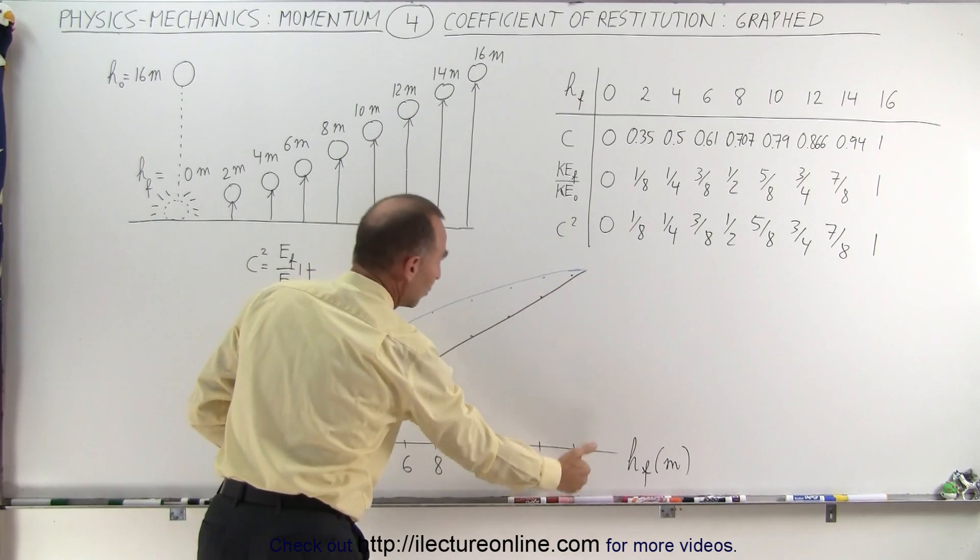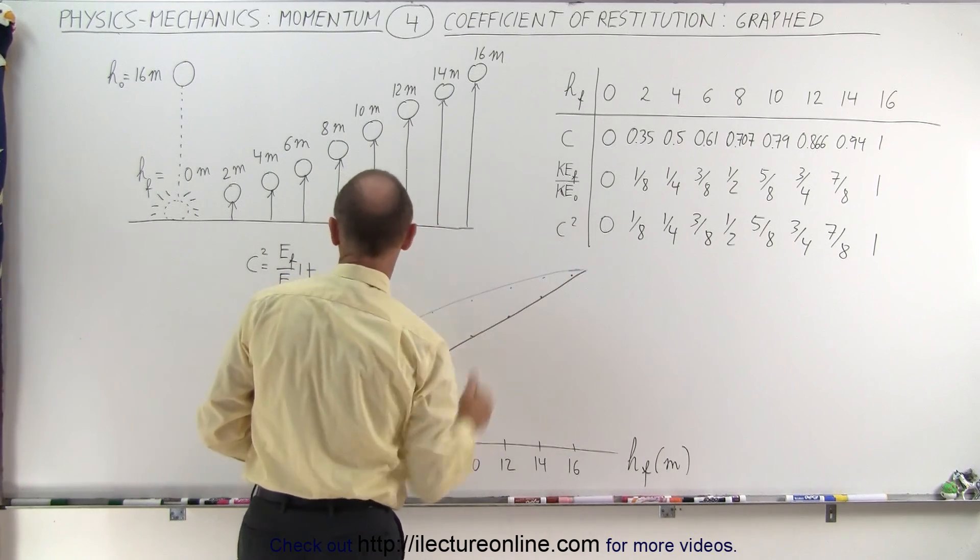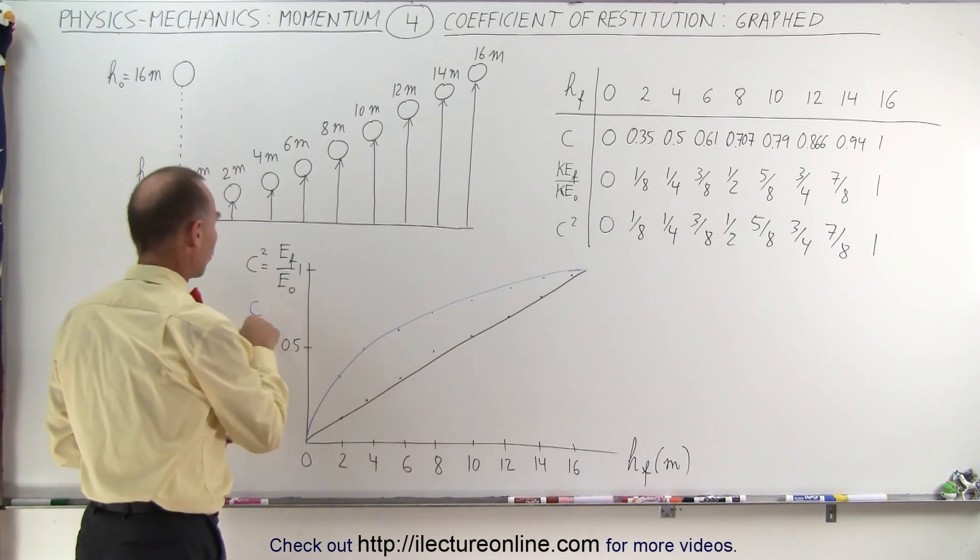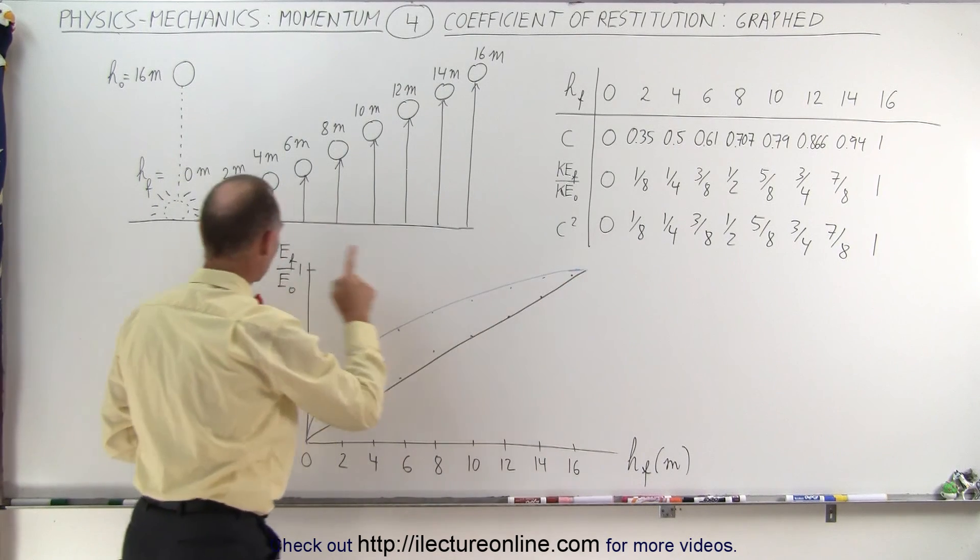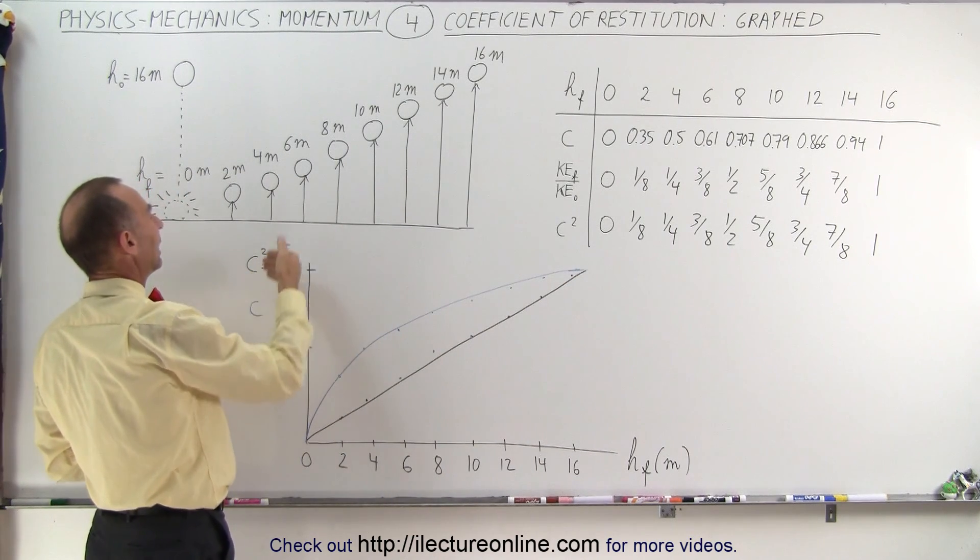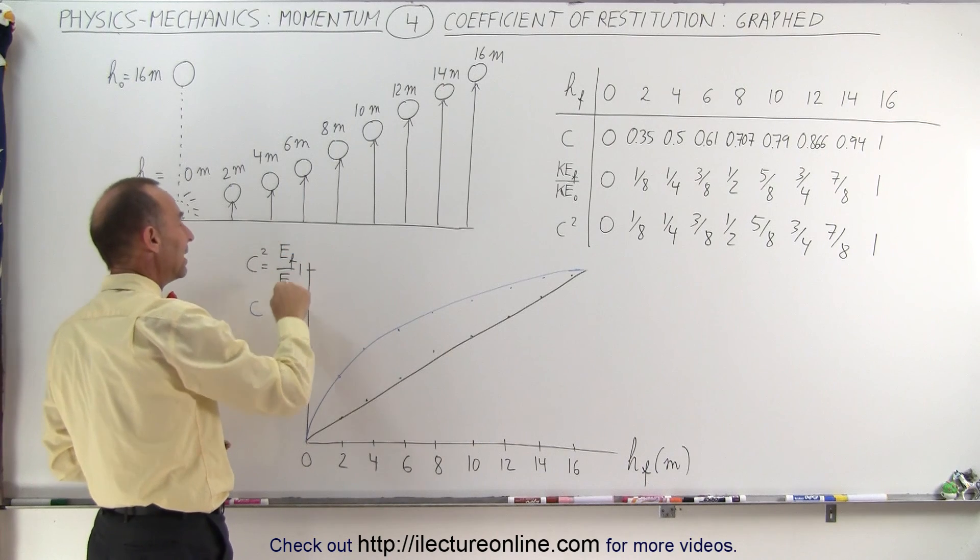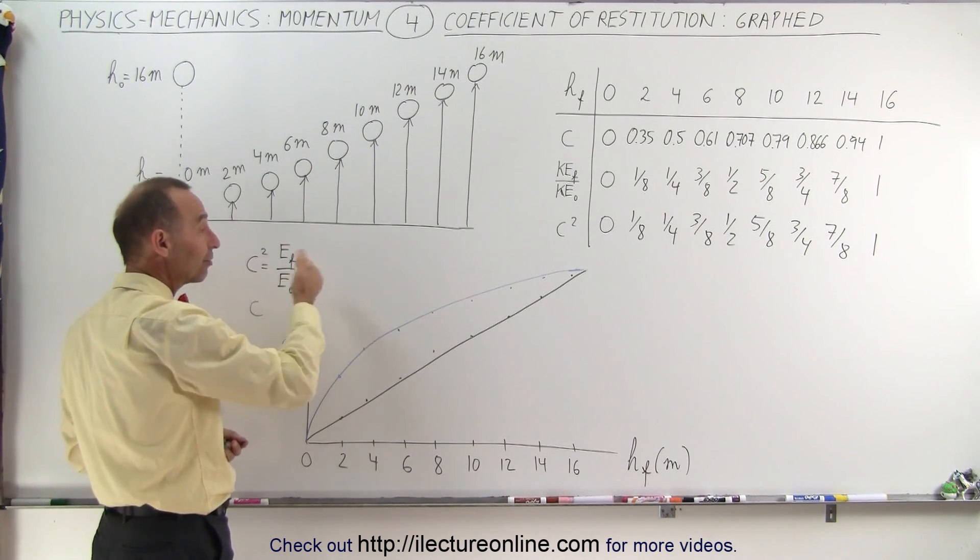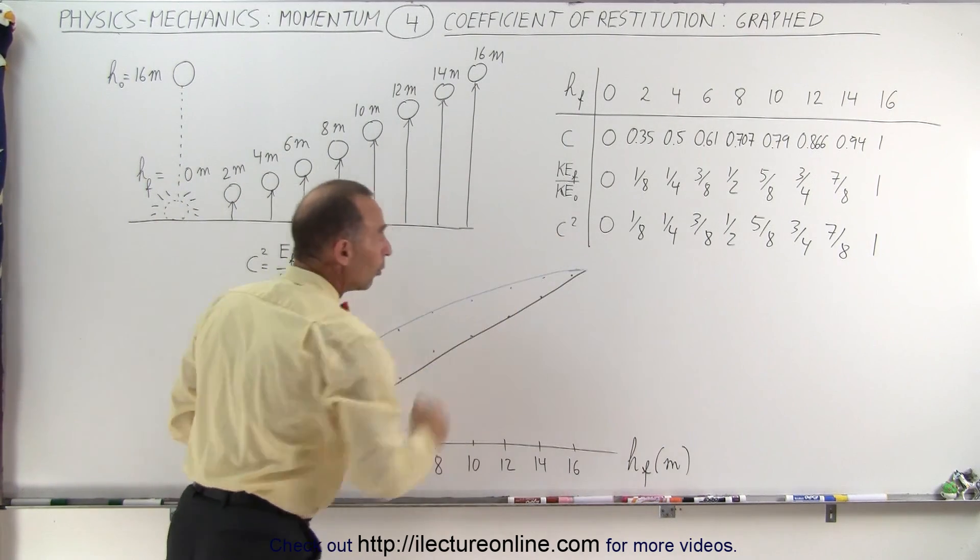And at the end, when it reaches the maximum height of 16 meters, then we know that the coefficient of restitution is one, the coefficient of restitution squared is one, and the ratio of the energies between the final and initial kinetic energy before and after the collision is also equal to one.